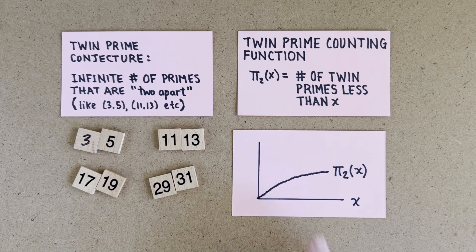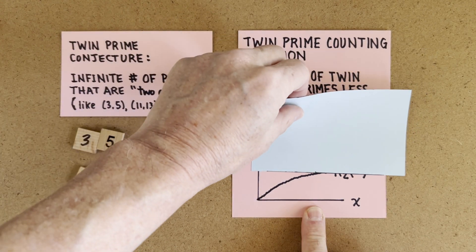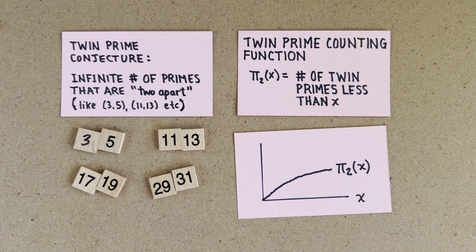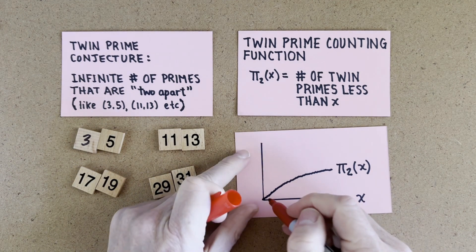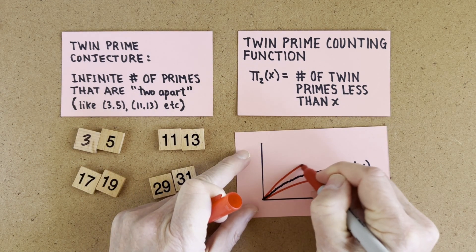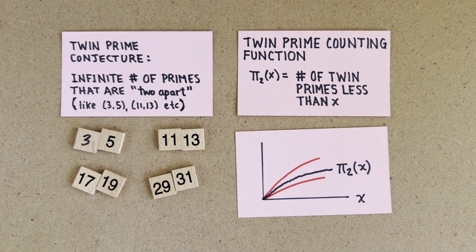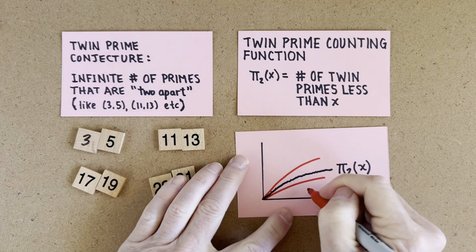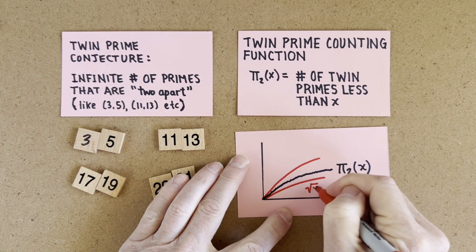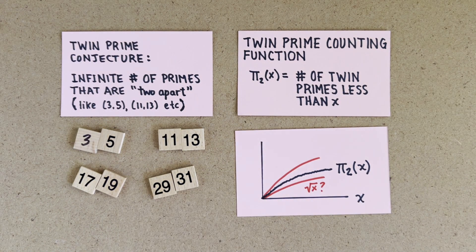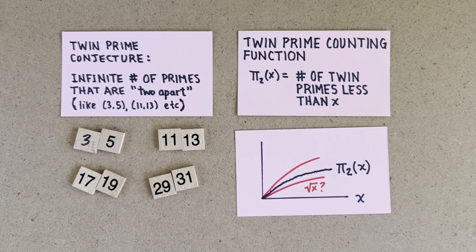The $64,000 question is whether the graph ever flatlines completely. One idea is to draw two smooth, well-understood curves and prove that π₂(x) is always between these curves. If the bottom curve were always increasing, like square root of x or something, then we know the twin prime curve could never flatline.